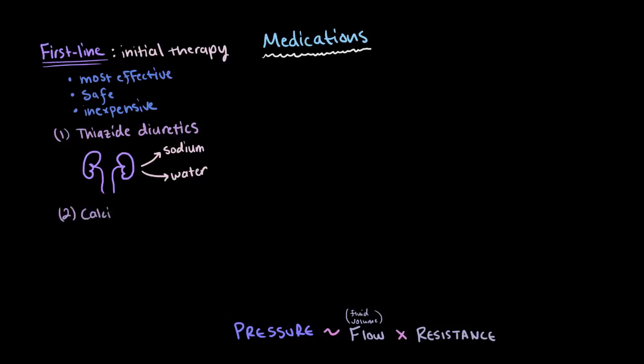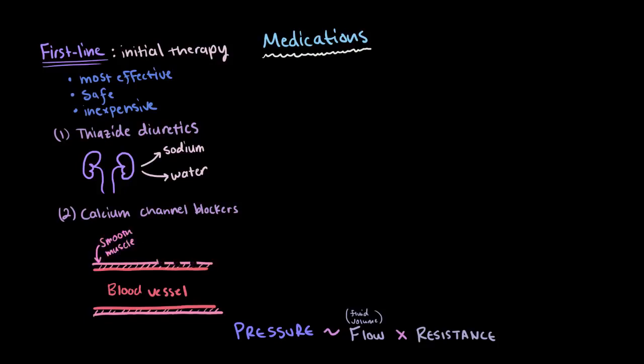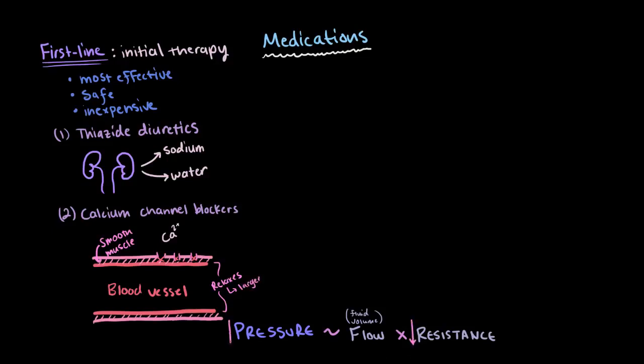You could also be prescribed calcium channel blockers, which block the channels in your vascular smooth muscles that let calcium ions go through. In effect, they reduce the contractions of your blood vessels and relax them. This essentially makes them larger and reduces their resistance, which reduces blood pressure.